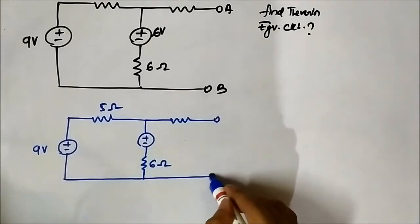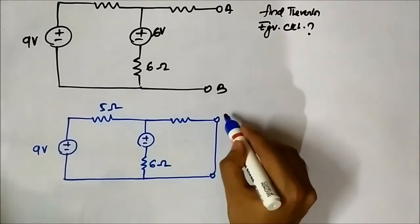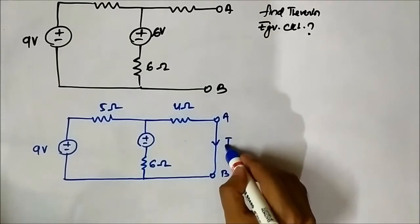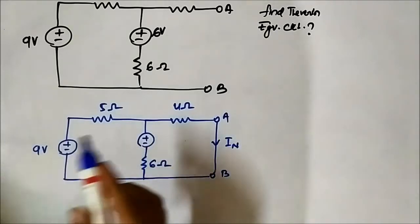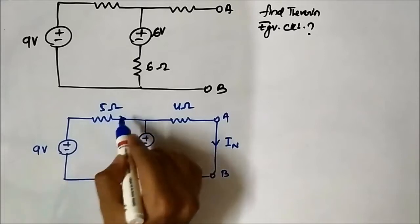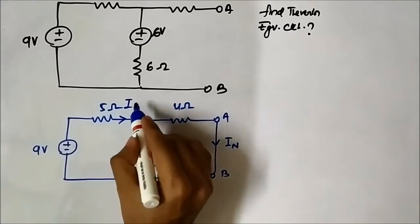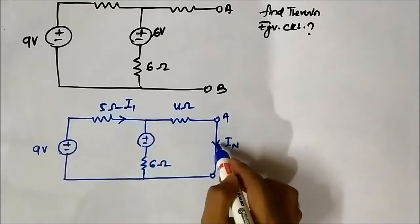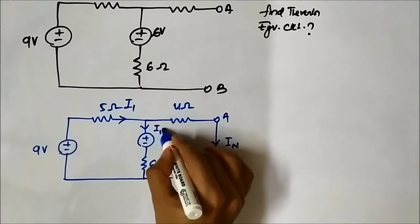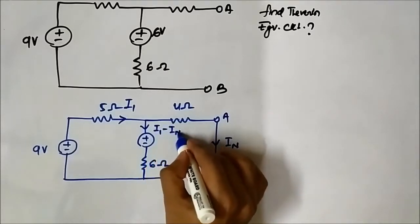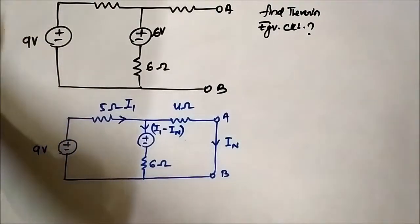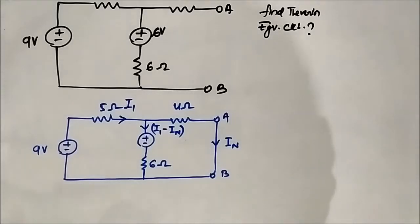We will join these two terminals, short them together, and we have to find this current In. Let us say that the current flowing through the 5 ohm resistor is I1. In is going here, so at this node it will be I1 minus In. Here we will apply mesh analysis.